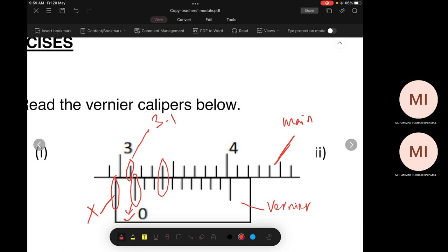So this one is what number, what division for vernier scale? This is one, right? This is two and this is three. Understand?